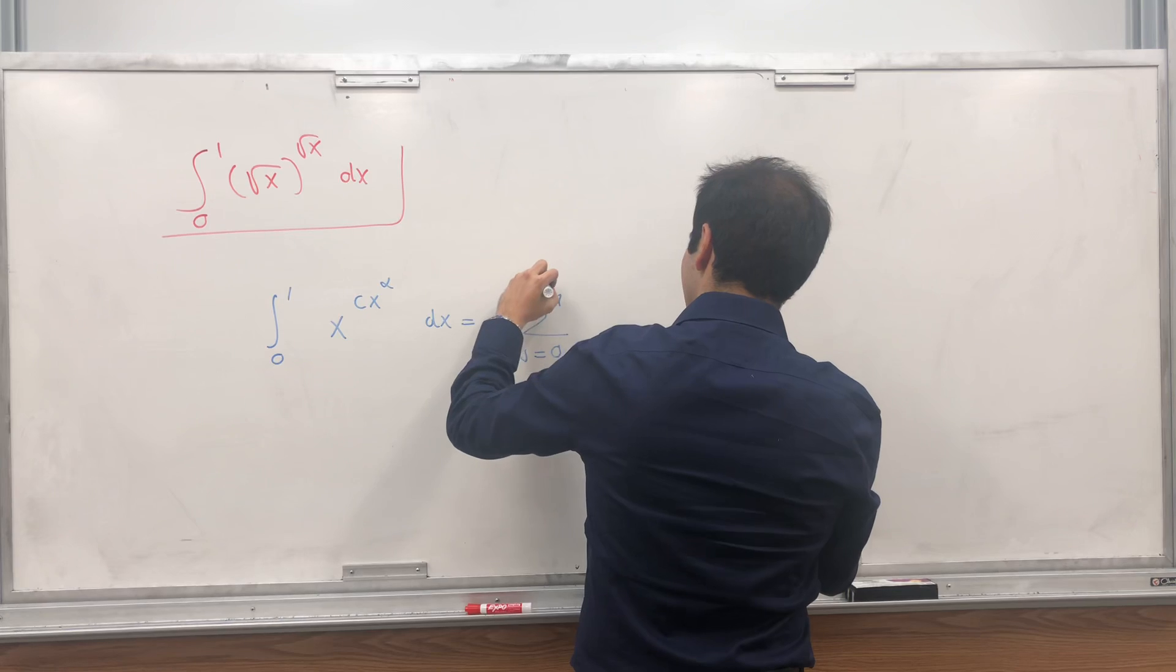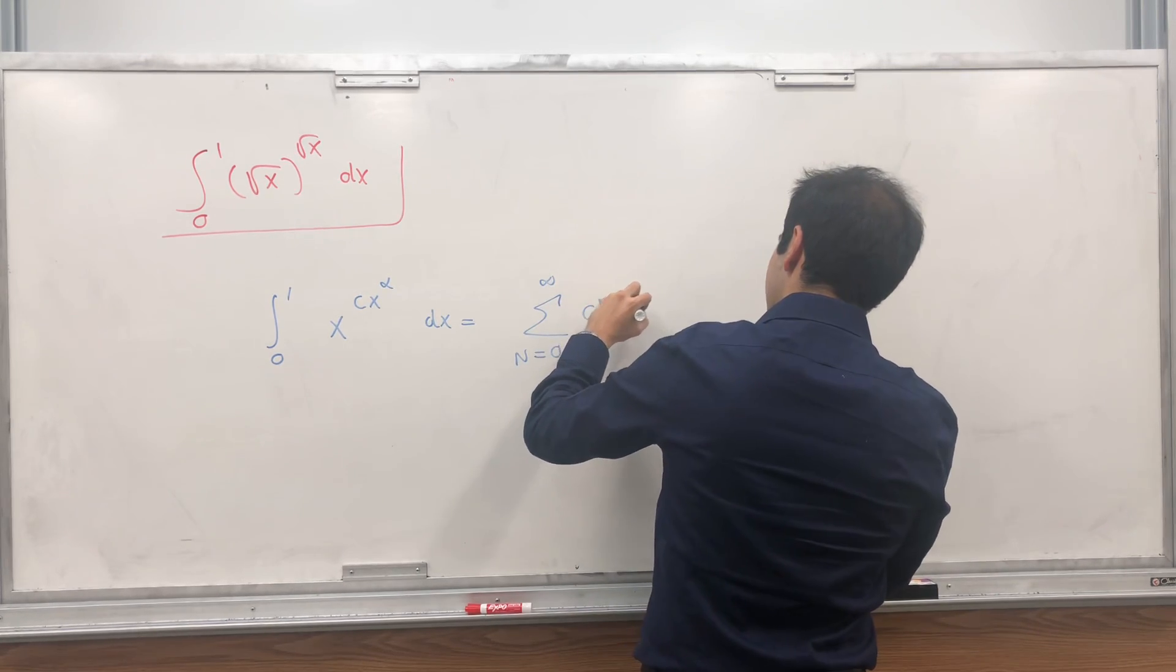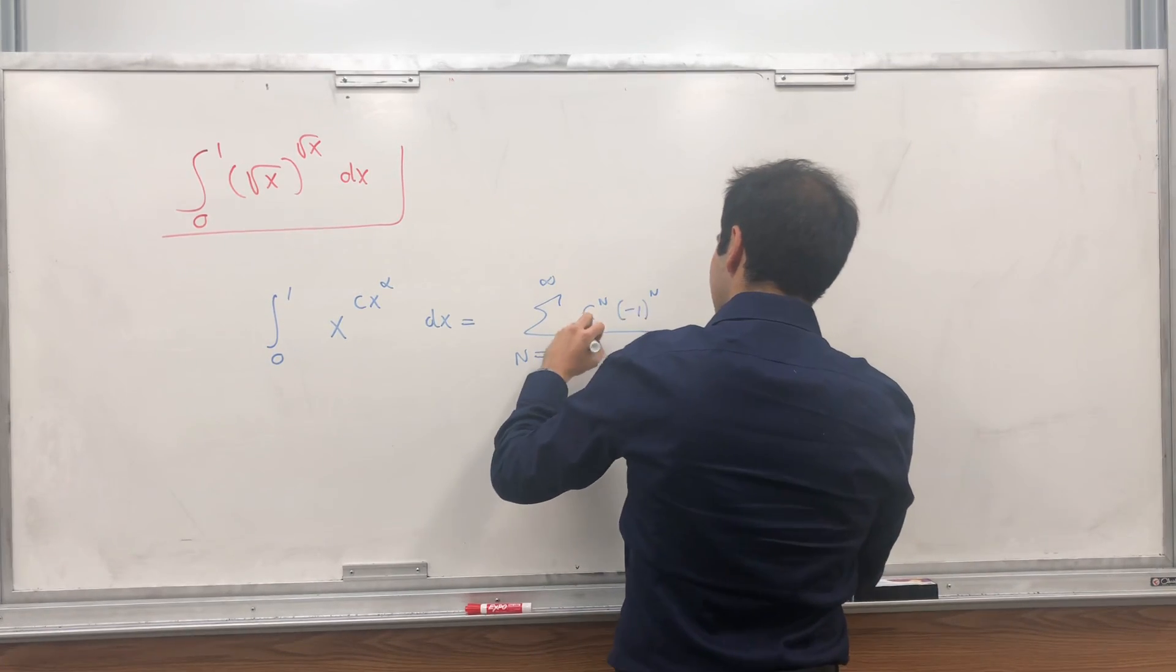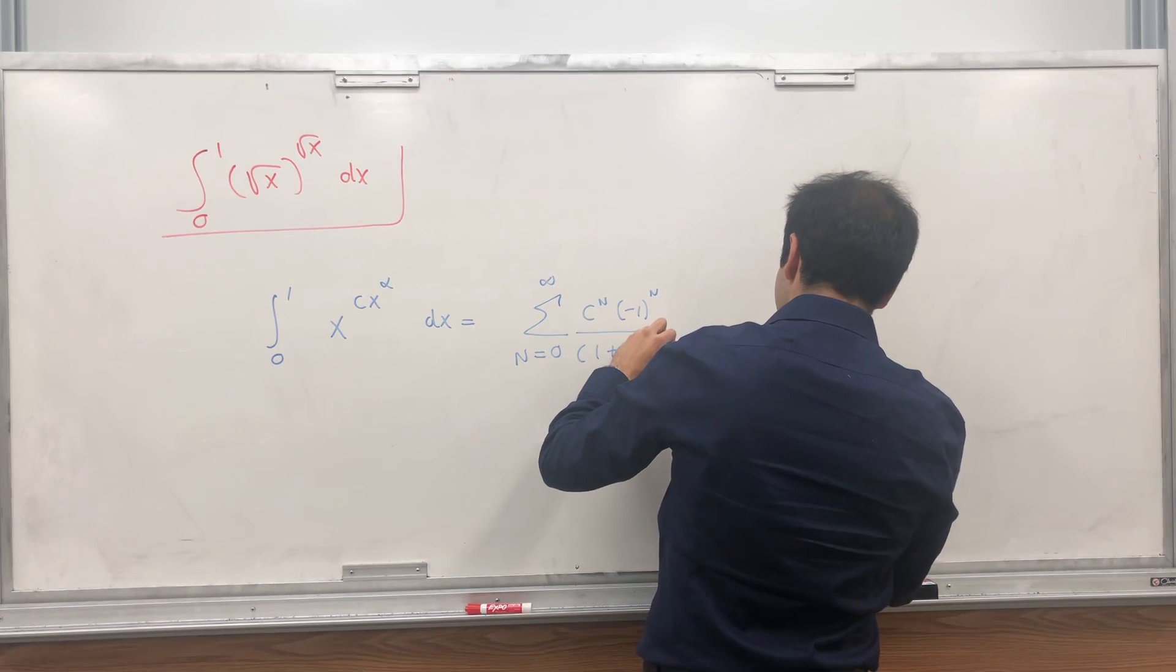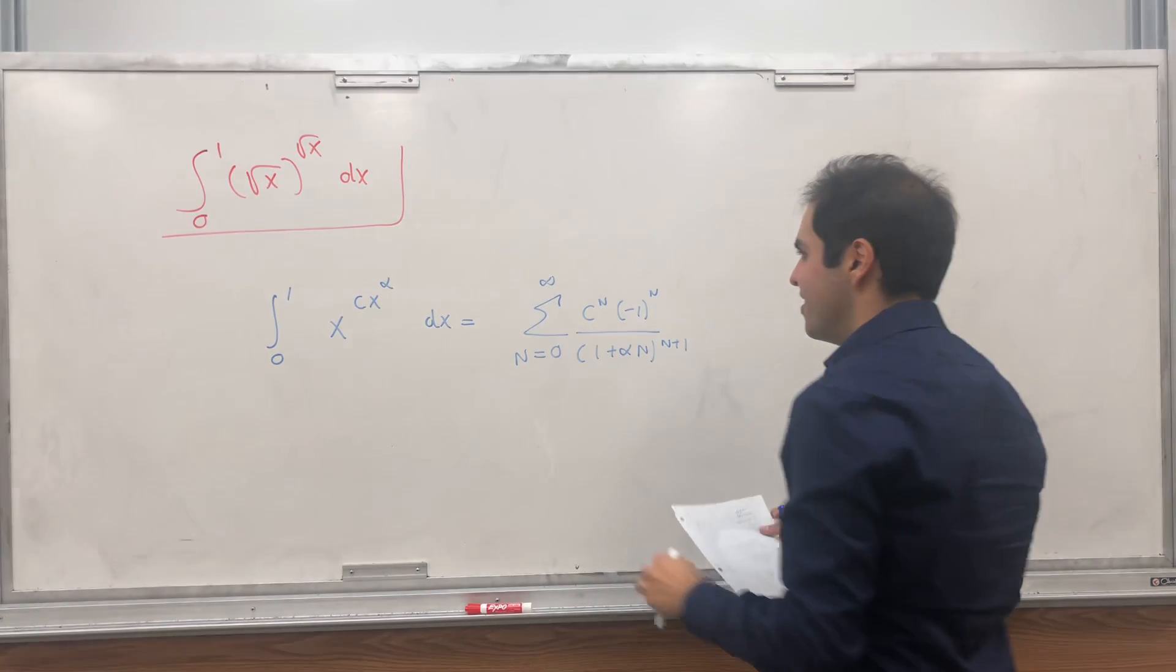Sum from n equals 0 to infinity of c to the n times minus 1 to the n, over 1 plus alpha n to the n plus 1.